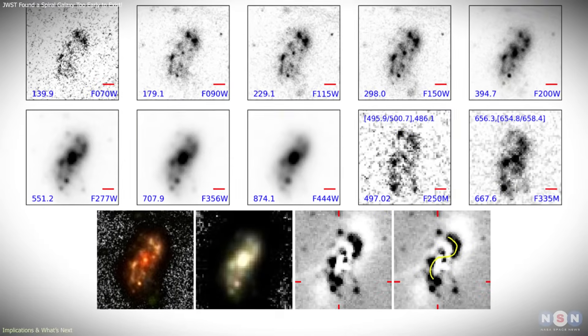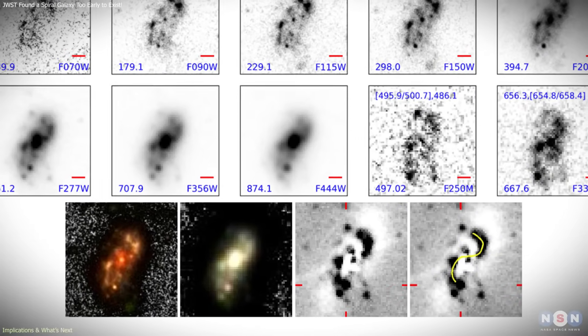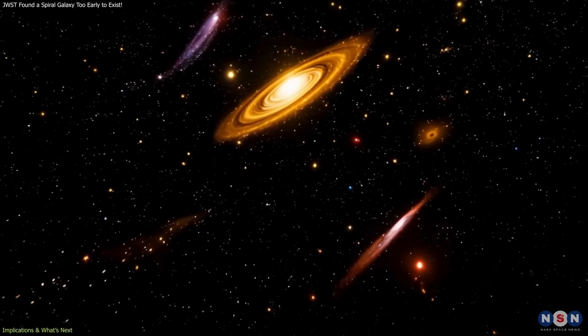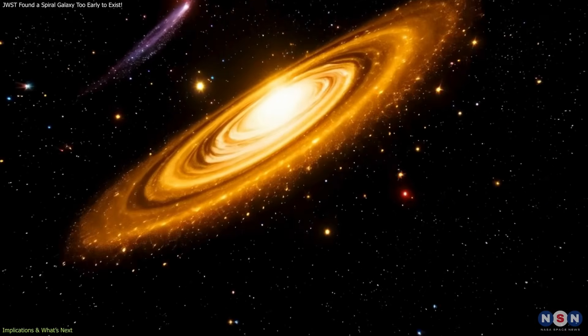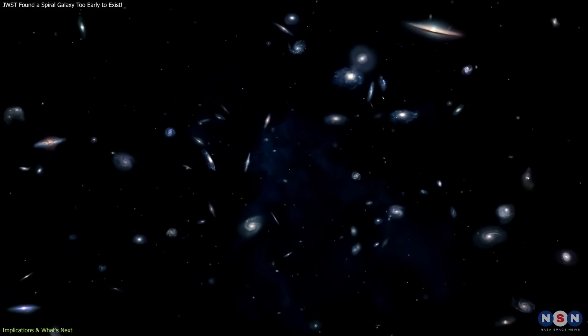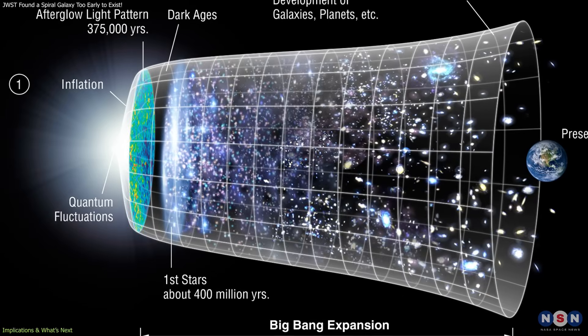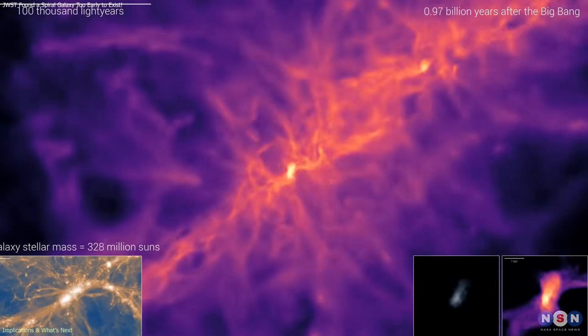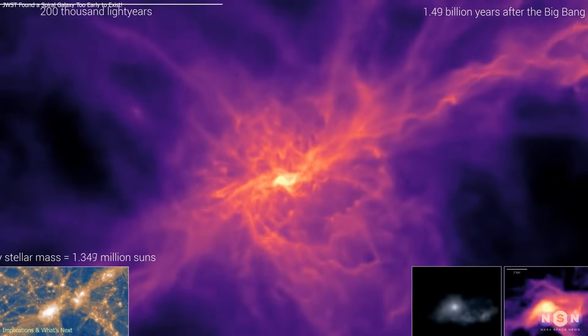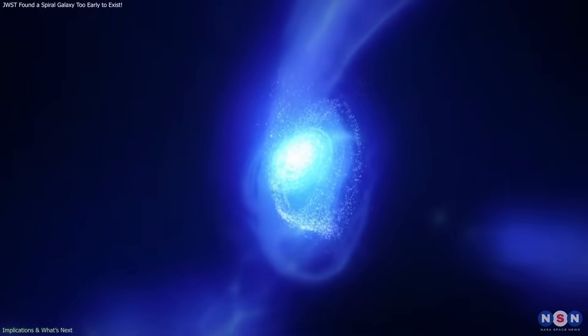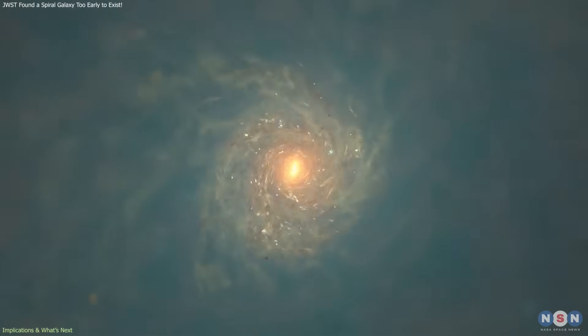The implications of Alec Nanda extend beyond its individual structure. Its existence suggests that the early universe was capable of forming stable, organized galaxies far earlier than standard theory predicts. If this behavior is common, the timeline of galaxy evolution needs to be reconsidered. Processes that were thought to require billions of years, such as disk settling, mass assembly, and the emergence of coherent spiral structure, may occur more rapidly under certain early universe conditions.